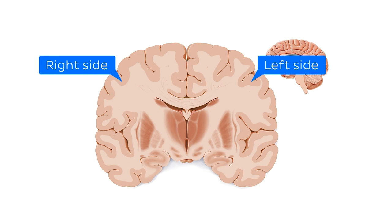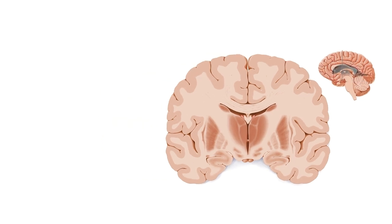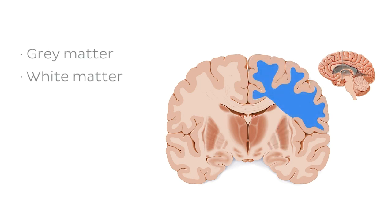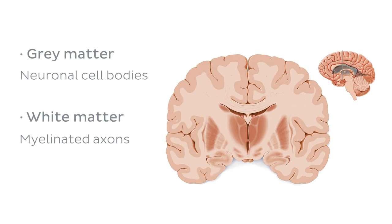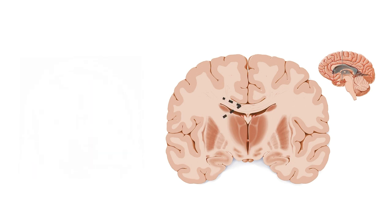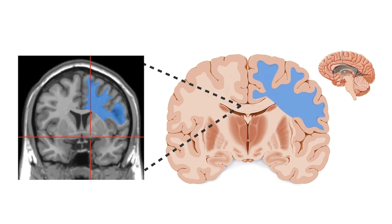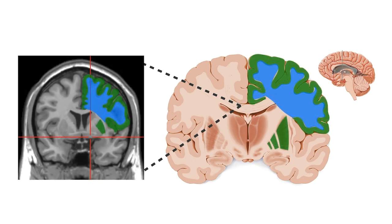Right and left is always relative to the subject. Parts of the brain appear lighter than others — this reflects what we call grey matter and white matter. The brain is made up of neurons and other supporting cells known as glial cells. Grey matter is a collection of neuronal cell bodies, while white matter is a collection of myelinated axons bringing messages away from the cell bodies. And just like in our illustration here, white and grey matter can be distinguished in MRI images.